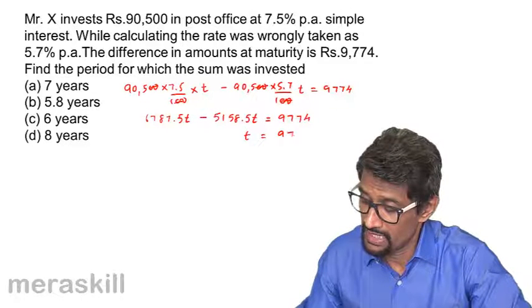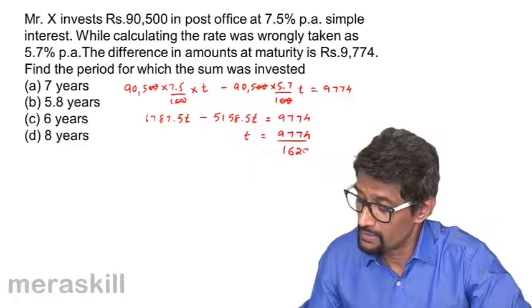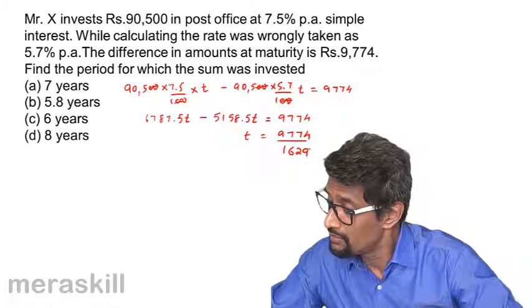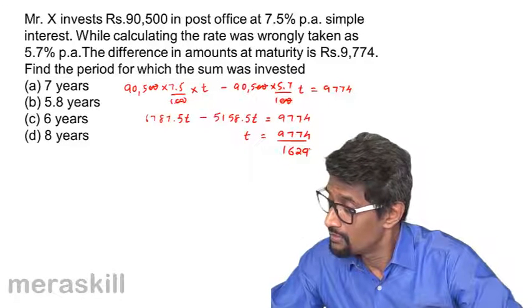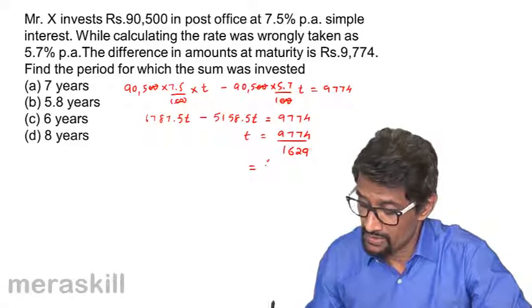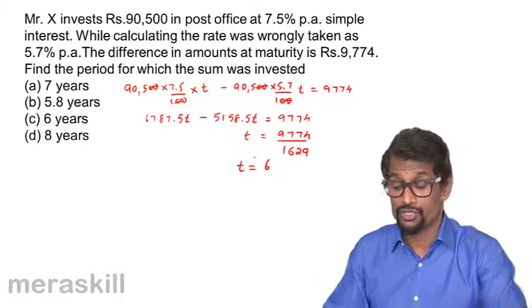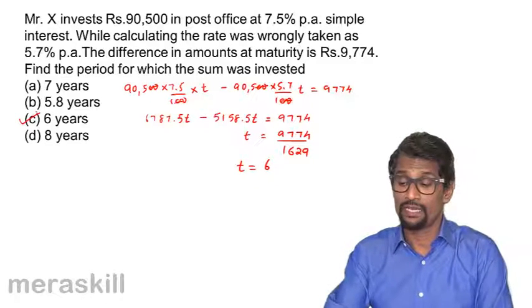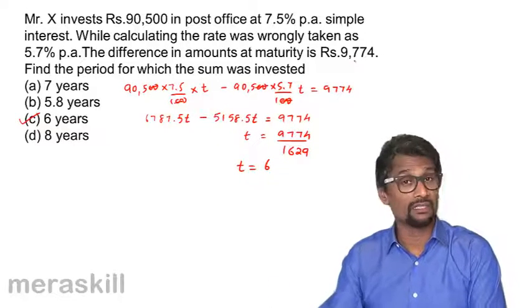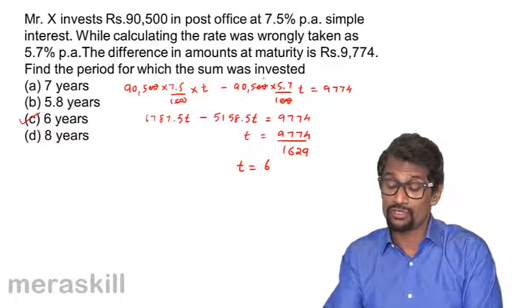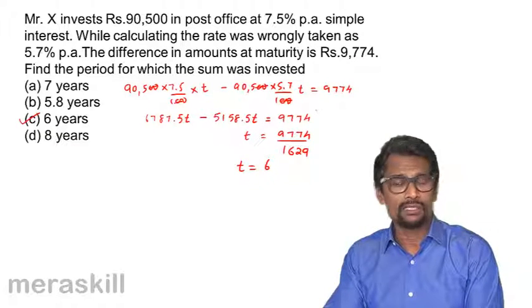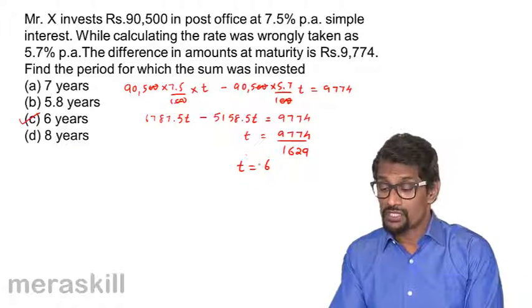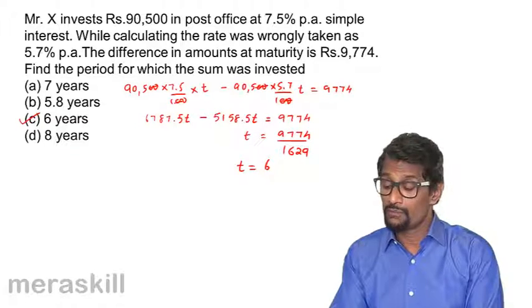So T turns out to be 9,774 divided by 6,787.5, which equals 6. That means the period for which the deposit has been made was six years. You just have to find the difference in the interest between the two, equated to 9,774. As I said, you could take it the other way around; only thing is you get an answer that's negative, which is okay for an MCQ. We just need to discard the negative value. So the time period is six years.